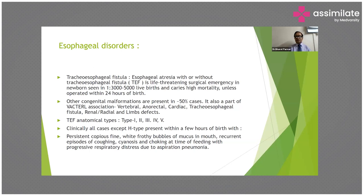It is also part of the VACTERL association: vertebral abnormalities, anorectal abnormalities, cardiac defects, tracheoesophageal fistula, renal abnormalities, radial abnormalities, and limb defects. Tracheoesophageal fistulas are of four types: type 1, type 2, type 3, and type 4.